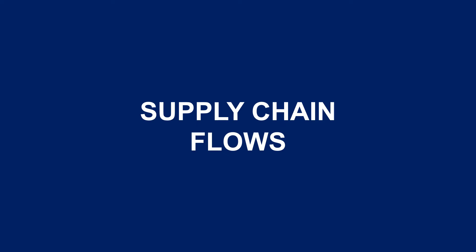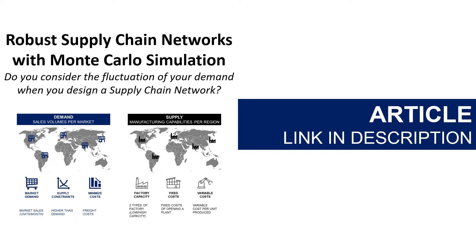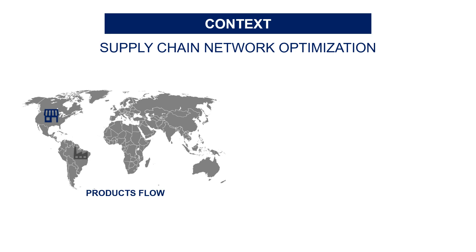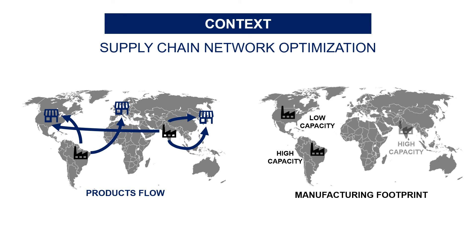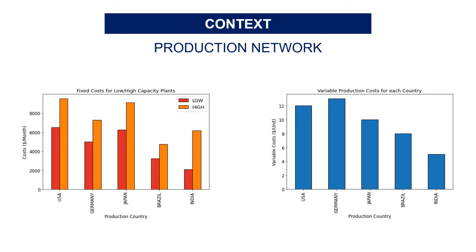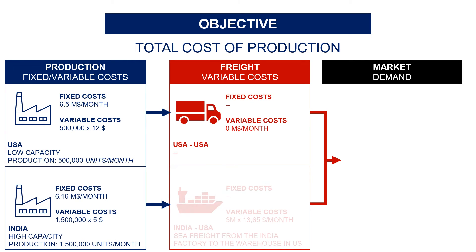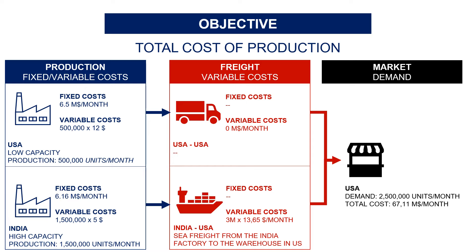The next example is Supply Chain Network Design and Flows. You can find in the blog two articles related to the design of supply chain networks using linear programming. The idea is to minimize production costs by choosing the production location while respecting constraints of supply and demand. You have several markets with their own demand in pieces and potential locations for your factories — you can choose low and high capacity plants. The main parameters are the fixed and variable costs of production, which depend on the country and plant capacity. Low capacity has low fixed cost, high capacity has high fixed cost, and the cost is higher in America versus in India. Moreover, you need to consider the transportation costs from the production site to the market, with the goal of finding the right production site to reduce total cost of production and transportation.